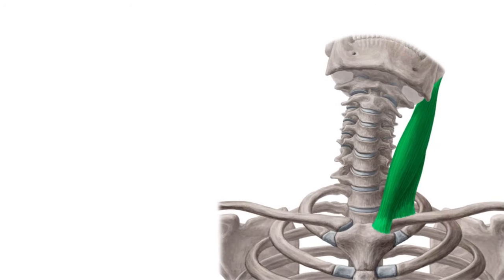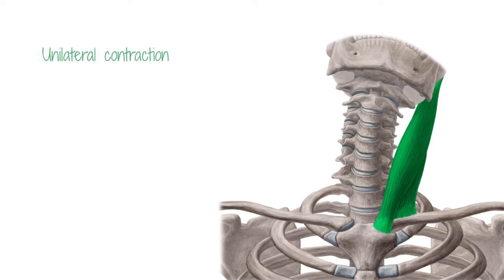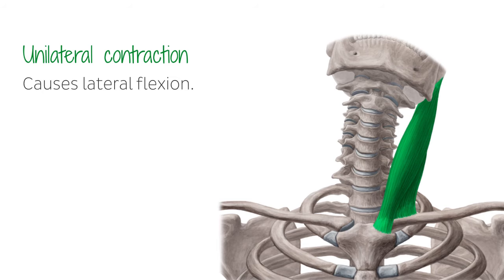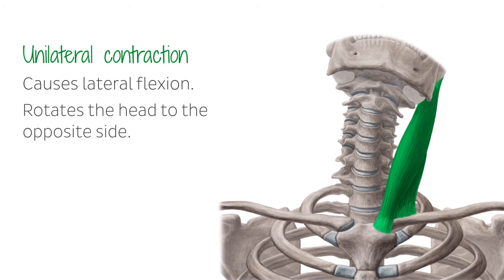A unilateral contraction of the sternocleidomastoid muscle flexes the cervical vertebral column to the same side, called lateral flexion, and rotates the head to the opposite side.